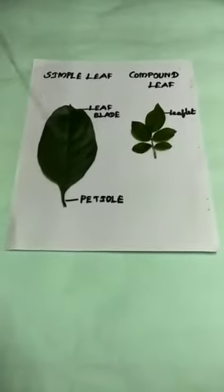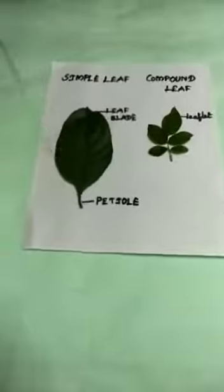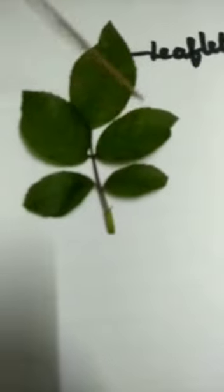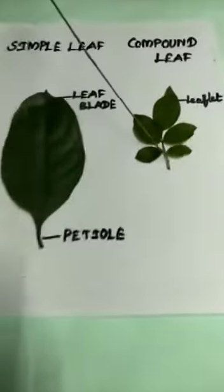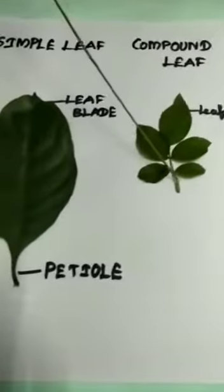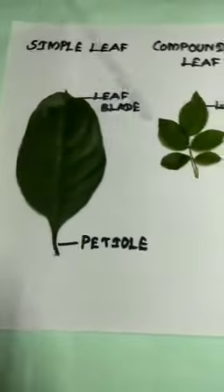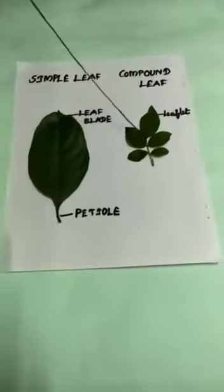What is the difference between simple and compound leaf? In a simple leaf, the leaf blade is entire. But in a compound leaf, the leaf blade is divided into many leaflets — each one is known as a leaflet. The center portion of a compound leaf is known as the rachis. This is the difference between simple and compound leaf.